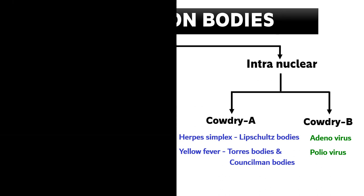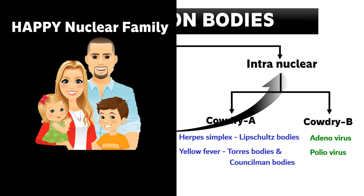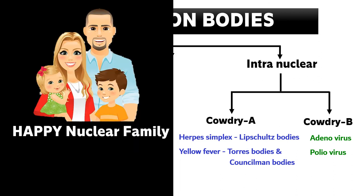Now for the intranuclear inclusion bodies, imagine that Paterson invited Rani to meet his family — a happy nuclear family. When I say nuclear family, you remember we are talking about intranuclear inclusion bodies. From the word HAPPY itself we can remember all the examples: H stands for herpes simplex virus, Y stands for yellow fever, A stands for adenovirus, and P stands for poliovirus. With the spelling HAPPY you can remember all examples under intranuclear inclusion bodies.